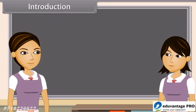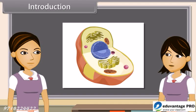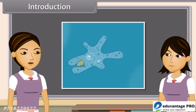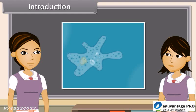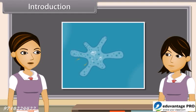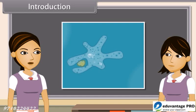We know that the cell is the structural and functional unit of life. Do you know what it actually means? It means a single cell can perform all basic functions of life — for example, movement, intake of food and respiratory gases, respiration, and excretion.